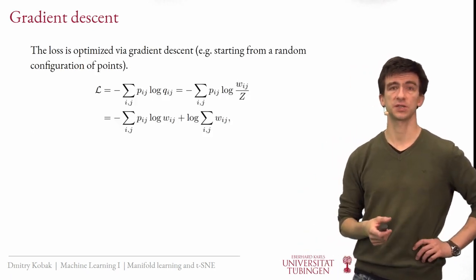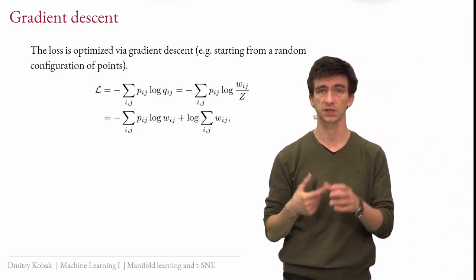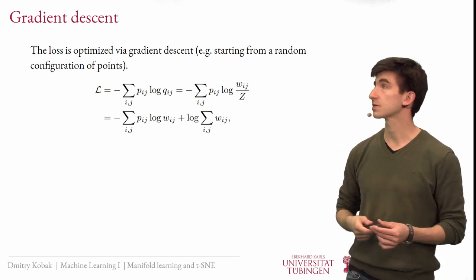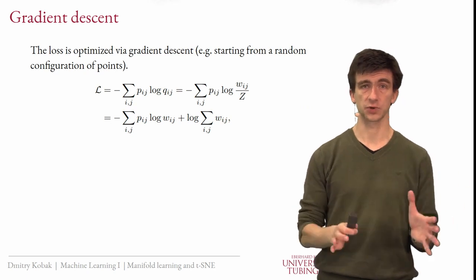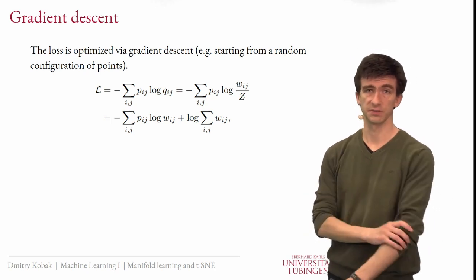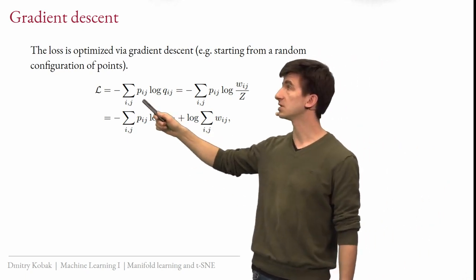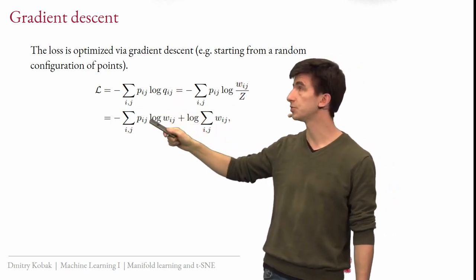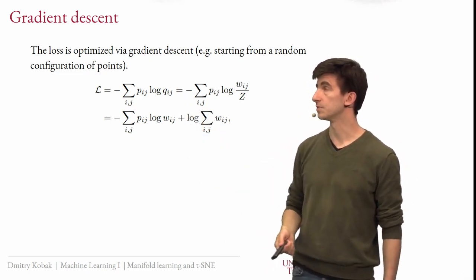Now we have P's and Q's and the KL divergence as our loss function. How do we optimize it? It turns out one can just use gradient descent, and it works. One can start with a random configuration of points and then run gradient descent to get the final embedding. To work out the gradient: the loss is the sum of P times log(P/Q). The P log P term is a constant with respect to our optimization, so what remains is minus P times log Q.